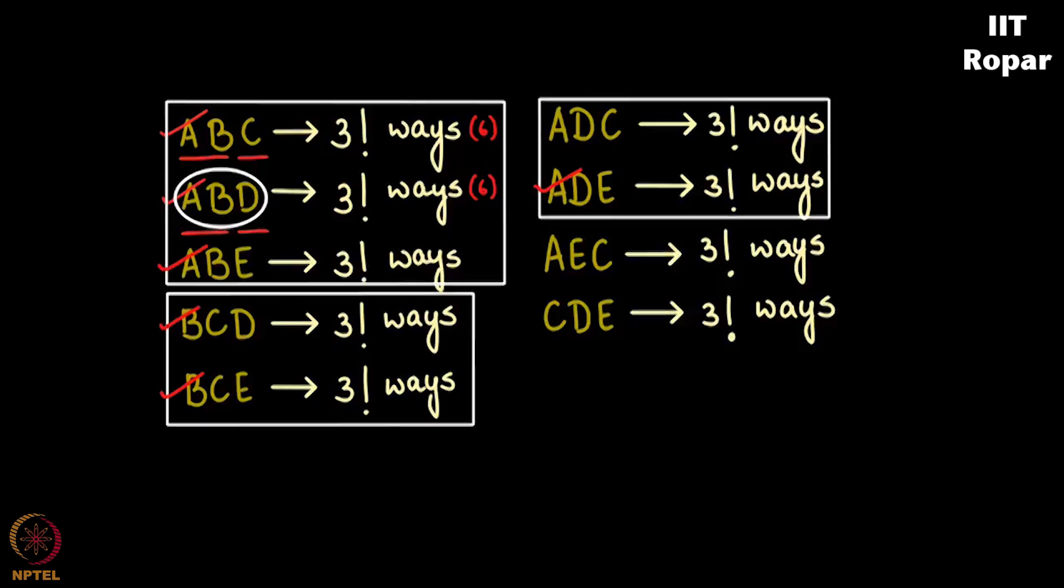The last possibility that we are missing here is D, B, and E, again three factorial ways.